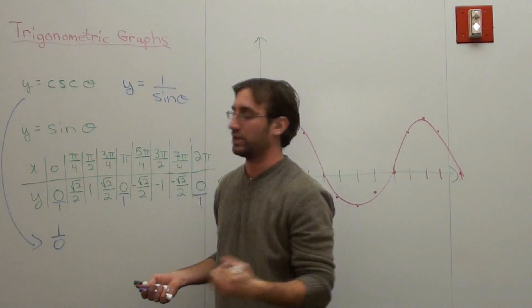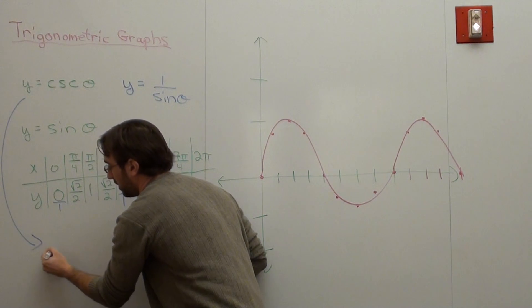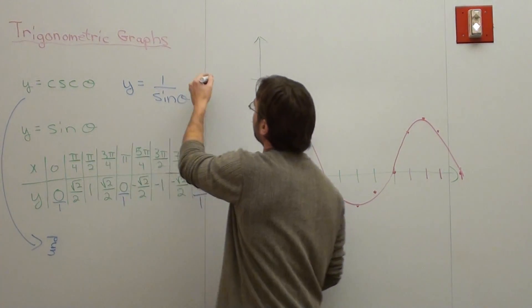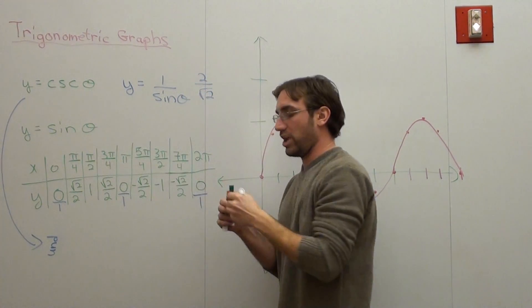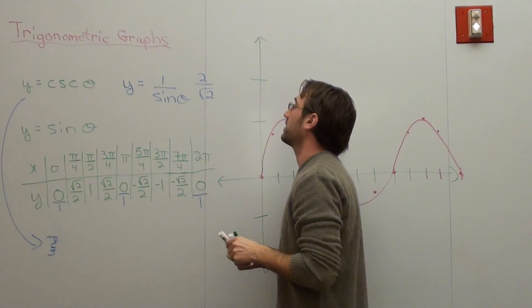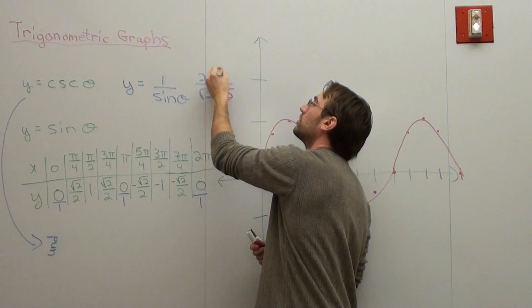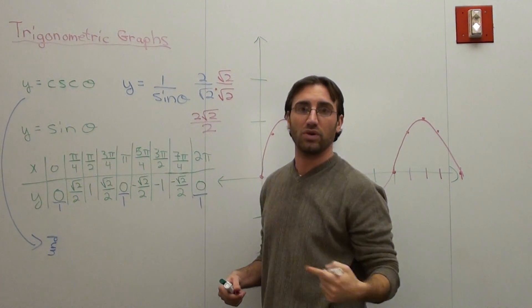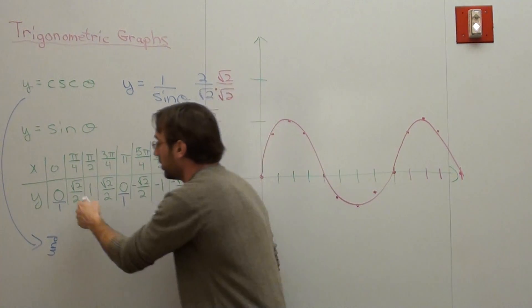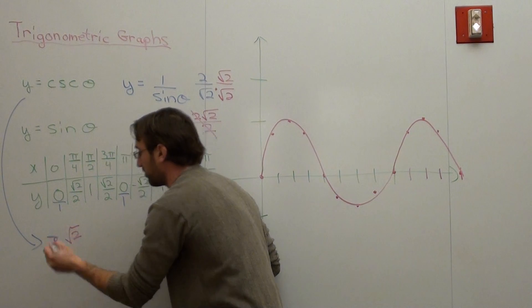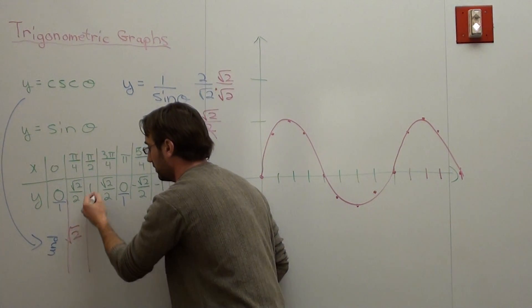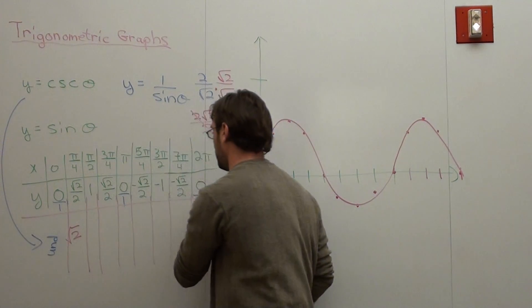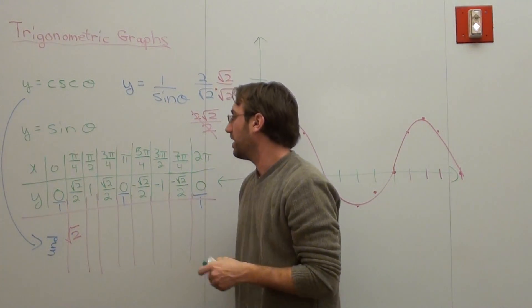This one's going to be one over zero - that's undefined, so I'm going to write undefined. This one's going to be two over root two, and when I flip that and rationalize the denominator, I multiply by root two over root two. This is two root two over two because root two times root two is root four, which is two. So this one switches to root two when I take its reciprocal.